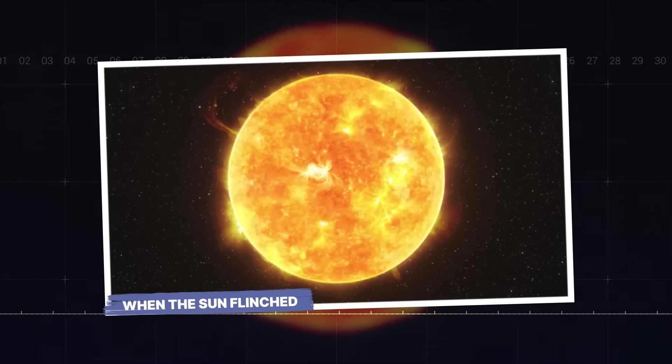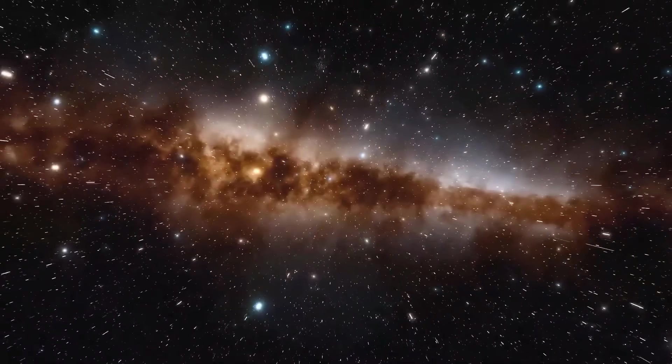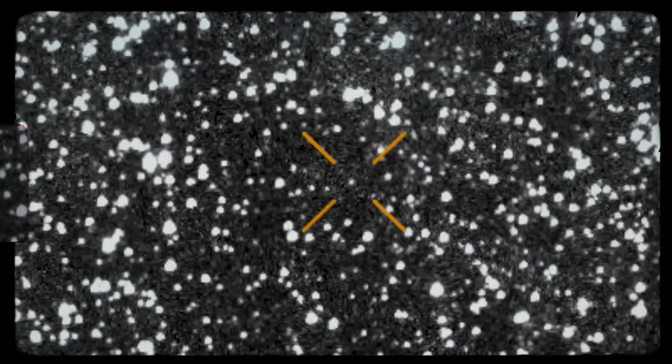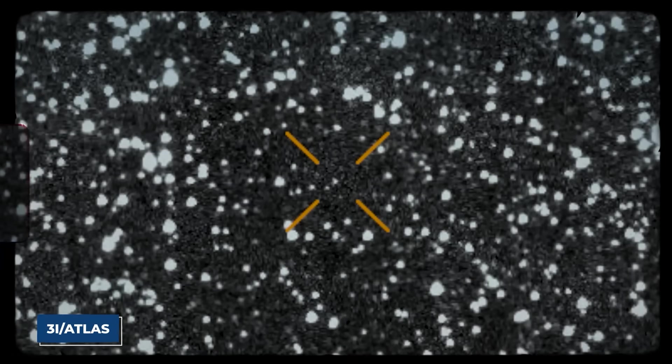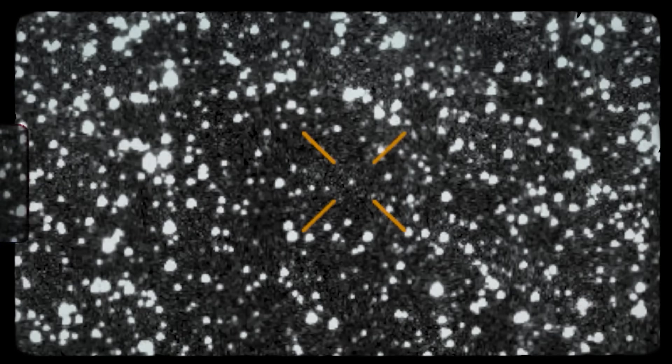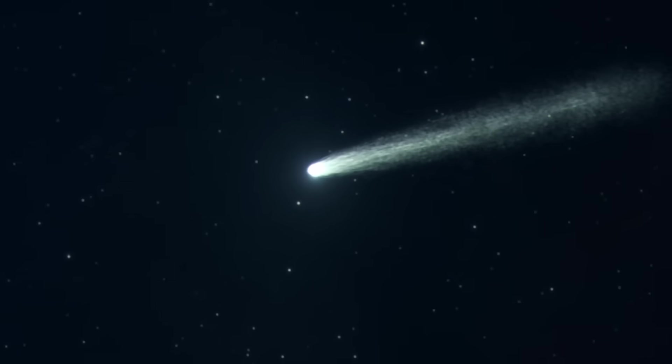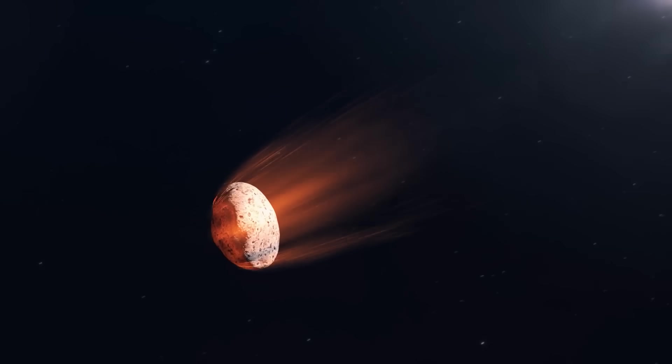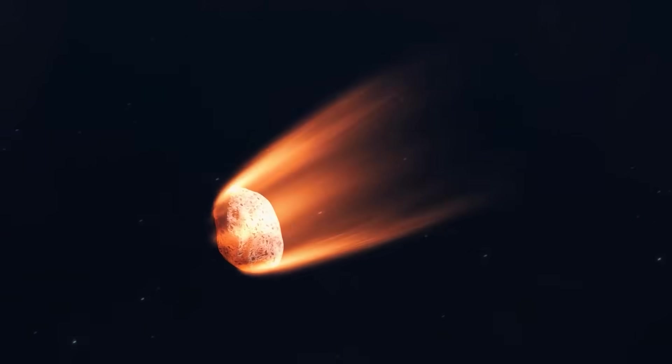When the Sun Flinched. The universe is a place of constant motion and incredible drama. But what unfolded recently with Comet 3i Atlas pushes the boundaries of imagination. For generations we've observed comets, those icy wanderers, as they make their graceful, or sometimes fiery, dance around our star.